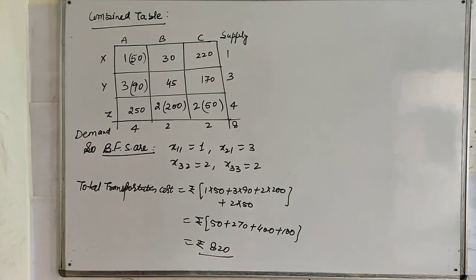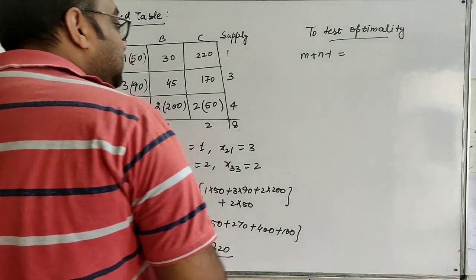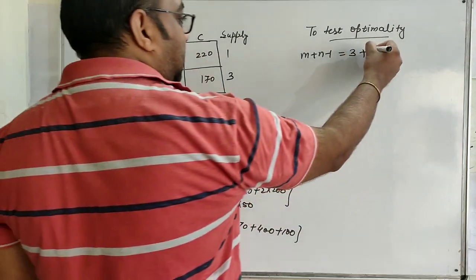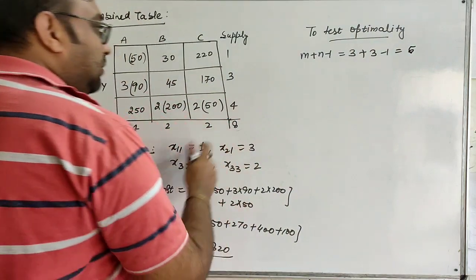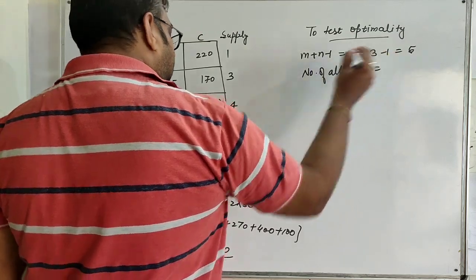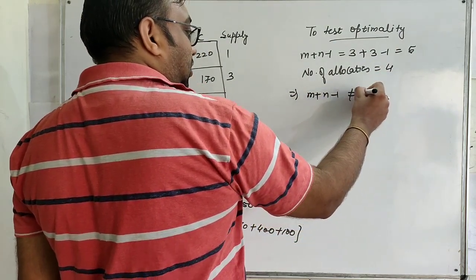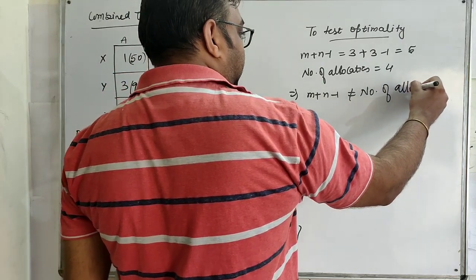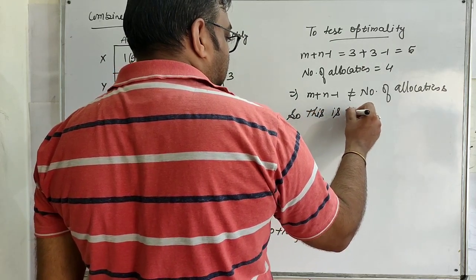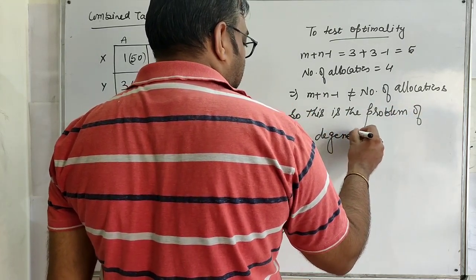Now we have to test optimality. M plus N minus 1: M is the number of rows (3) and N is the number of columns (3), so M plus N minus 1 equals 5. The number of allocations is 4 (allocations 1, 2, 3, 4). It means M plus N minus 1 is not equal to the number of allocations. So this is the problem of degeneracy.